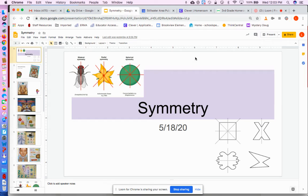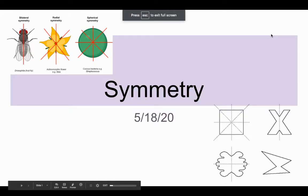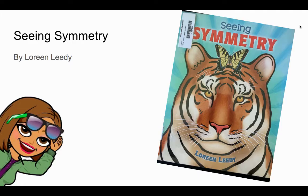Hey third graders. We are done with our math book and we are going to do some other fun things in math this week. Today's lesson is all about symmetry, which is something you probably know a little bit about and something that you need to know a little bit more about. I have a book from the library called Seeing Symmetry by Laureen Leedy, and I'm going to share some of that with you.